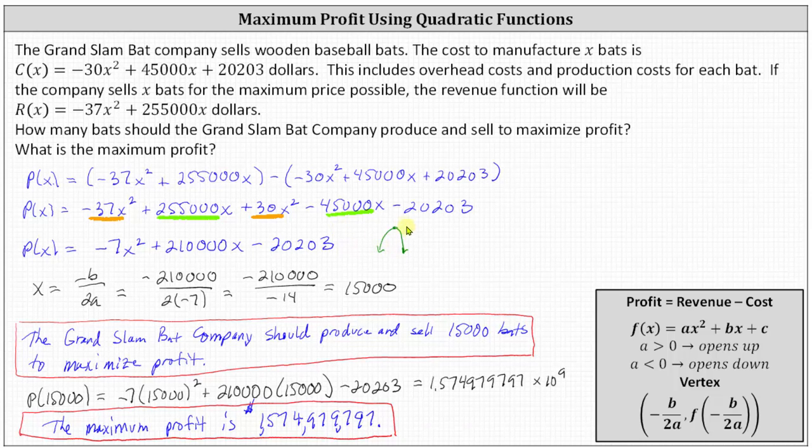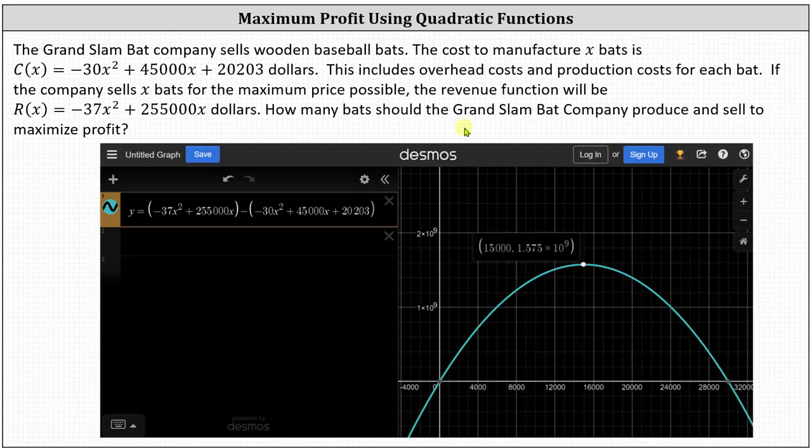And before we go, let's verify this graphically. To verify this graphically, we graph the profit function and then find the vertex. Notice in this case, I actually entered in Y equals the revenue function minus the cost function. By doing this, I can also check to make sure the profit function is correct.